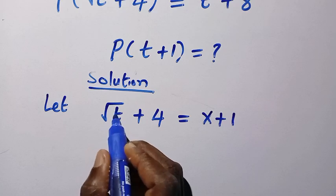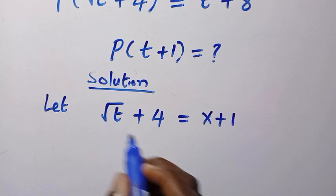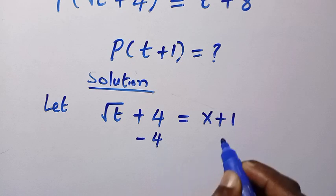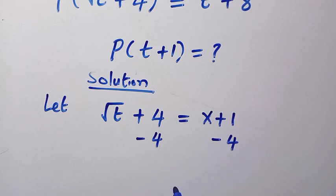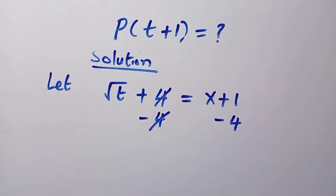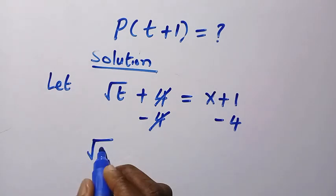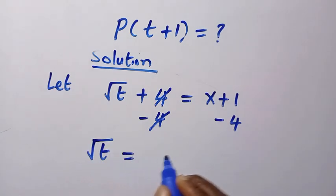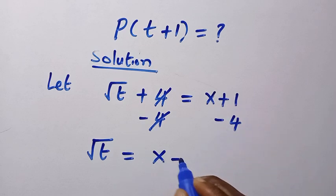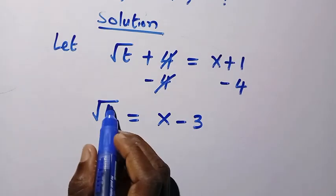So we are going to make t the subject of the formula. Here we have 4, we cancel this 4 by subtracting 4 from both sides. When we subtract 4 from both sides, 4 cancels and square root t equals x + 1 minus 4, which gives us x minus 3.